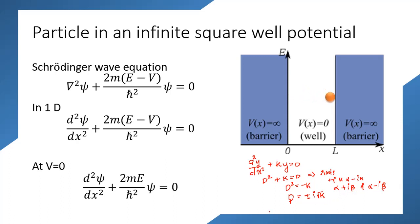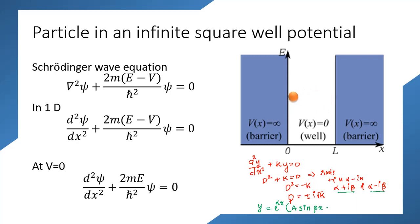When the roots are complex conjugates of each other, the solution of the second-order differential equation is written as: y = e^(αx) · [A sin(βx) + B cos(βx)].